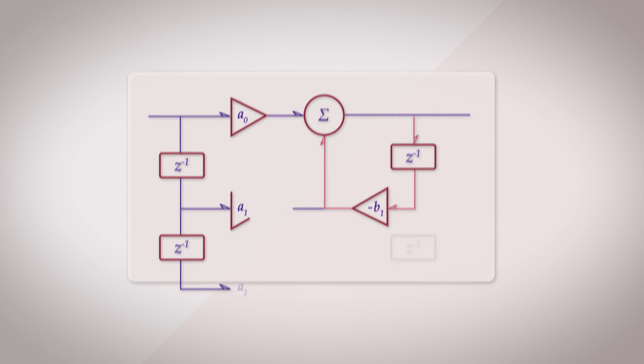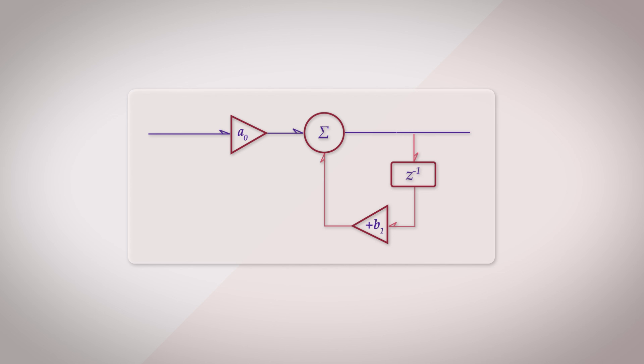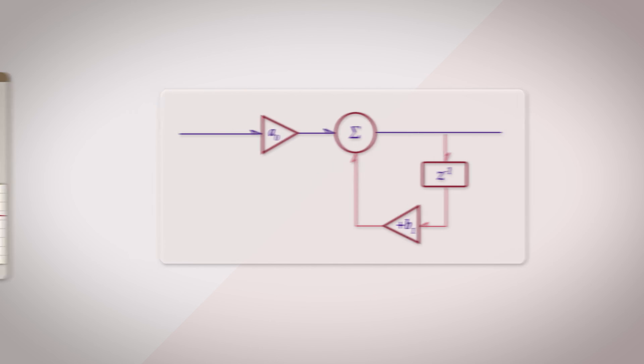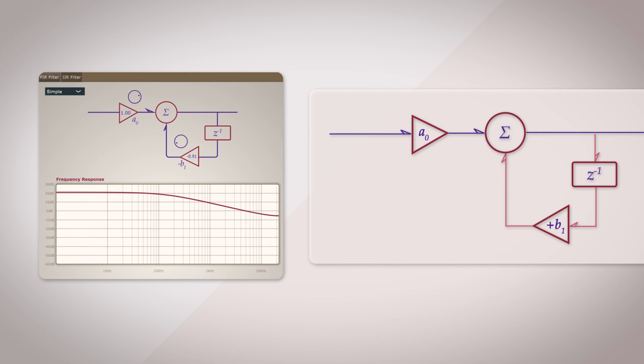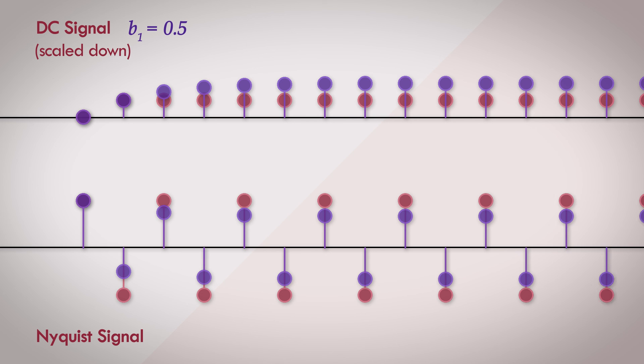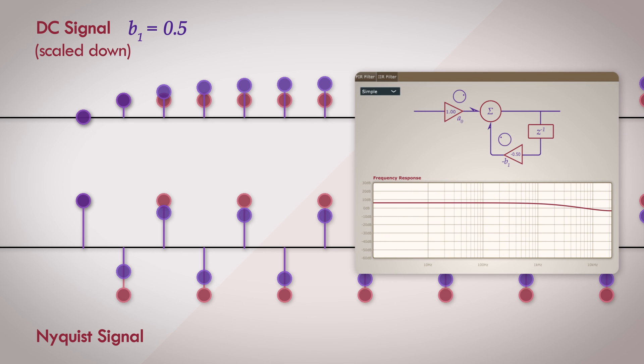Let's take a look at what happens if the coefficient B1 is positive, meaning that we are adding the feedback path, rather than subtracting it. Again, we have the mental picture that this will cause lower frequencies to be boosted, and higher frequencies attenuated. So with DC signal as the input and B1 as 0.5, we get this. Swapping the input out with the Nyquist signal, we get the following output signal. Is this something that you were expecting? Does it make intuitive sense? The time domain output signal kind of correlates with the frequency domain response of the filter for individual frequencies that we are observing right now.